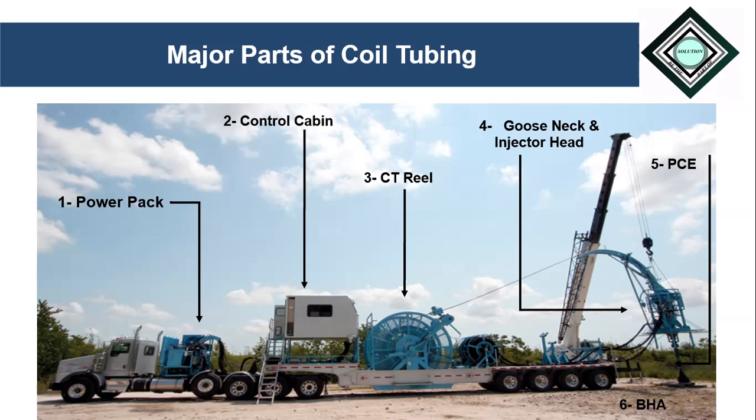The third part, the coil tubing reel, is actually a drum on which the coil tubing string or simply the coil tubing pipe is wound. The coil tubing reel provides two basic functions: number one, to store the coil tubing string; and number two, to provide a passage for fluid transmission into the well.